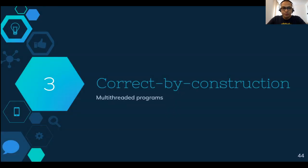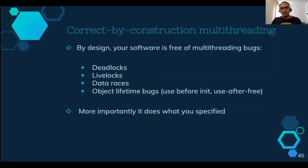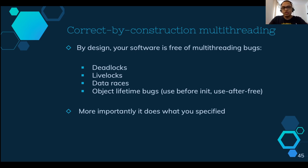Part four: correct-by-construction programs. These are programs that are, by design, free of design bugs. For multi-threading, that means no deadlocks, no livelocks, no data races, no object lifetime bugs — like an object being used from another thread before it was initialized by the main thread. And most importantly, your program or data structures do what they were specified to do: a concurrent queue returns what you put in, in order.